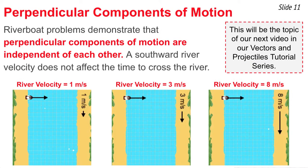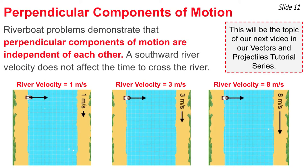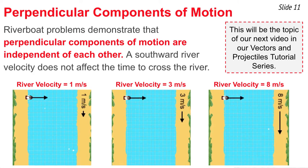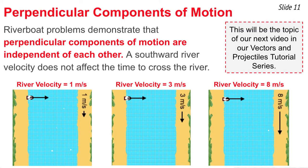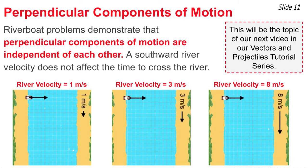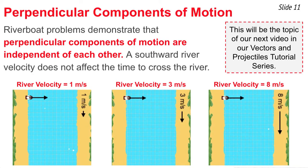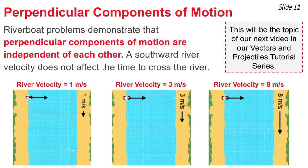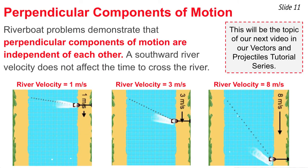One concept that riverboat problems teach us is that perpendicular components of motion are independent of each other. As you see in these three animations, the river velocity is different, but the time to head east across the river is the same in every case. The platform on which the boat is traveling is heading south, but the boat heads east, and this southward velocity of the river has no effect upon the eastward motion of the boat. It takes the same time to travel eastward across the river in all three situations — perpendicular components of motion are independent of each other. This will be the topic of our next video.